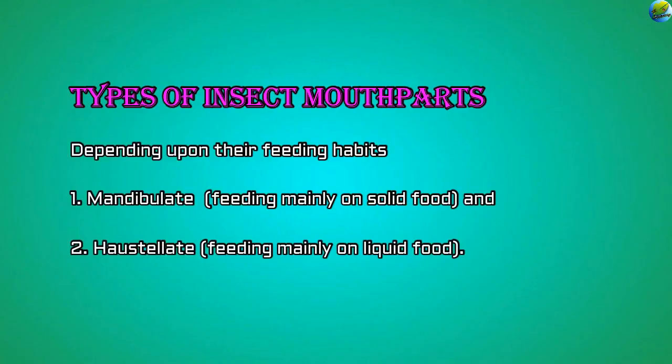This covers the basic structure of insect mouth parts. Now let's examine modifications based on feeding habit. Insects have two kinds of feeding habits: the mandibulate type, which feeds mainly on solid food, and the haustellate type, which feeds mainly on liquid food. The mandibulate type is considered the most primitive mouth part type, resembling ancestral insects, while the haustellate type is more modern, having evolved from the primitive form.